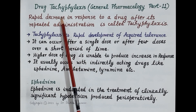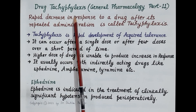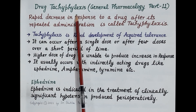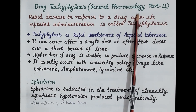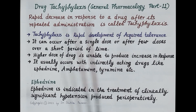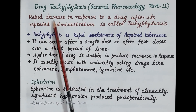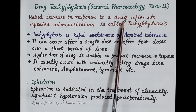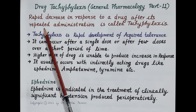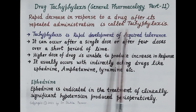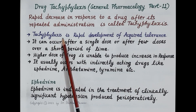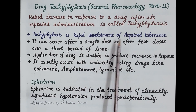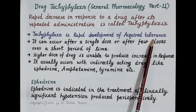Hello students. In today's video we are going to discuss the topic of tachyphylaxis. This video is 11th in the series of videos on general pharmacology. Rapid decrease in response to a drug after its repeated administration is called tachyphylaxis. In other words, tachyphylaxis is the rapid development of acquired tolerance.